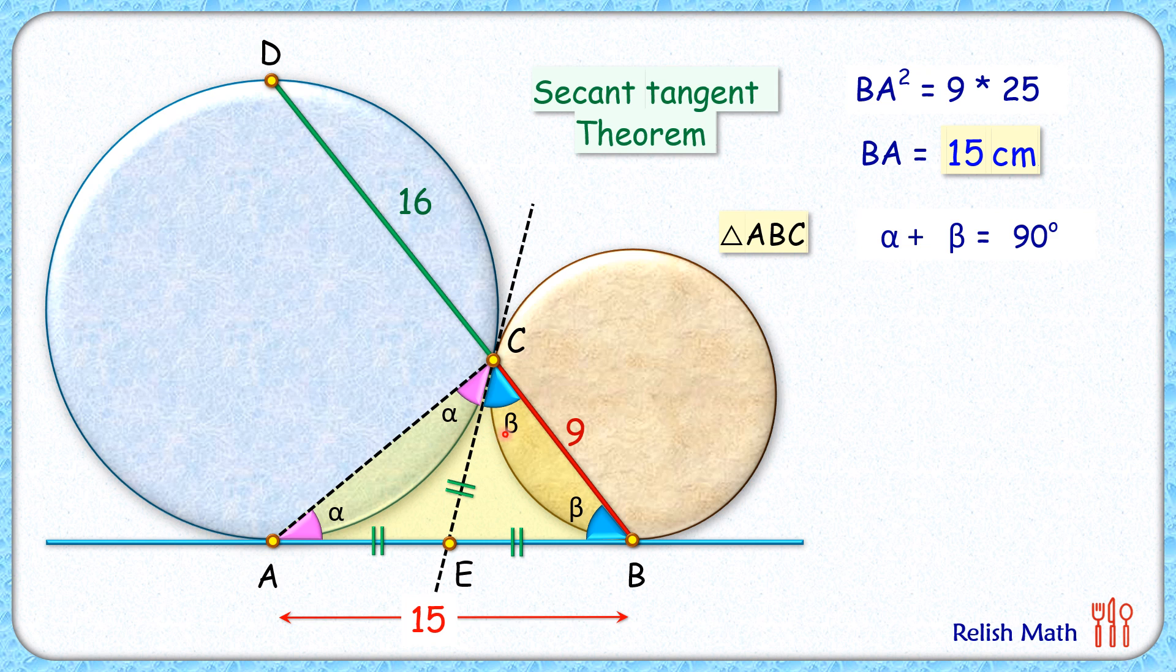So α + β, or angle C here, is 90 degrees. Now in this triangle ABC, it's a right-angle triangle. Applying the Pythagorean theorem, we get AC² + 9² = 15². Solving, we get the value of AC as 12 centimeters.